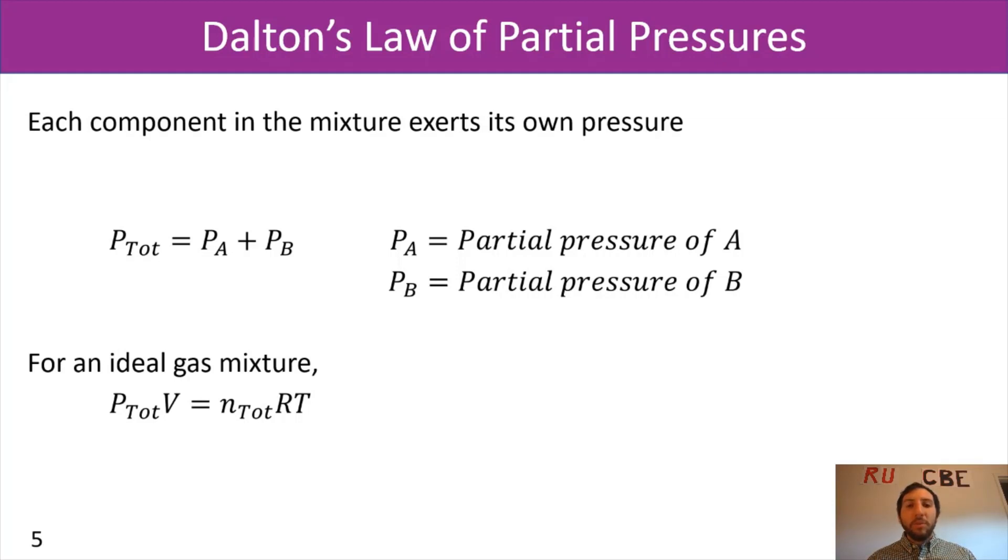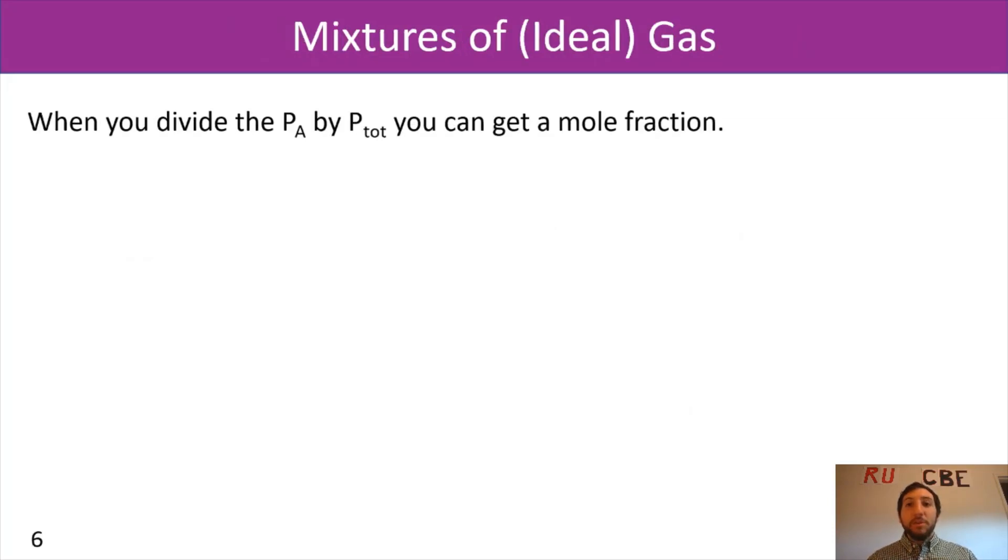For us, with an ideal gas mixture, we would have P total times V equals N total RT. But now we can also apply that idea in Dalton's law of partial pressures for a single component. For component A, PA times V equals NA RT. So that partial pressure of A is directly correlated to the number of moles of A we have. When you divide the PA by P total, you can get a mole fraction. So if we took that ideal gas law for species A, we divided it by the total ideal gas law for our whole system, we would now be able to cancel out a lot of our terms. And we would have PA over P total equals NA over N total, which is really our mole fraction for A.